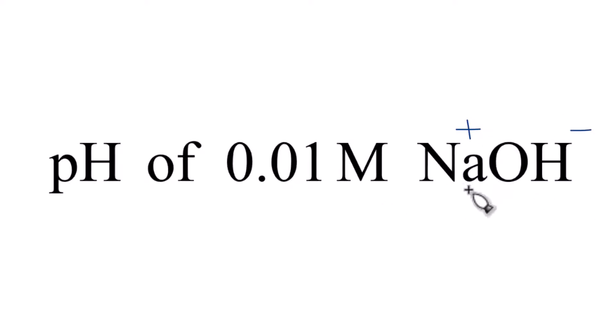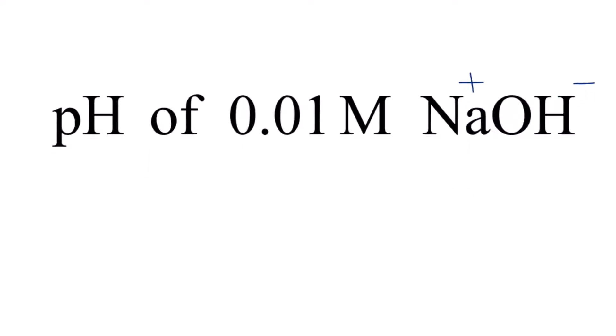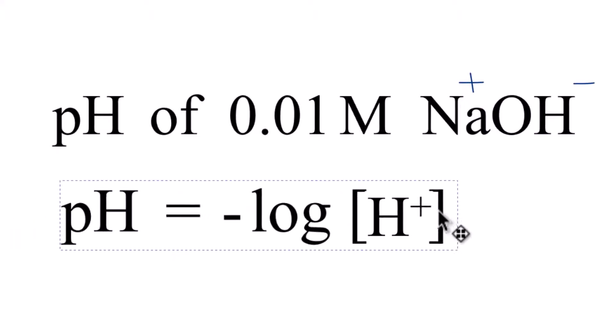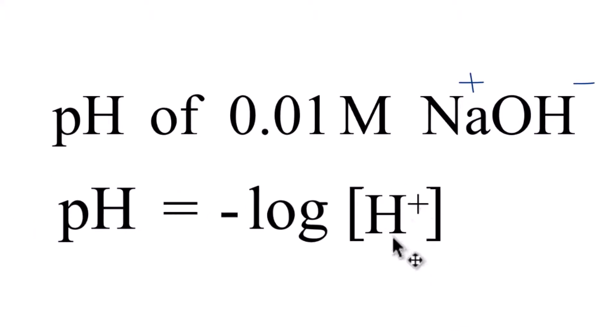So when we look at pH, and we're thinking about our formula here for pH, it's the negative log of the concentration of the H plus ions, the hydrogen ions. We don't have any H plus ions here.